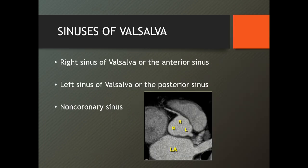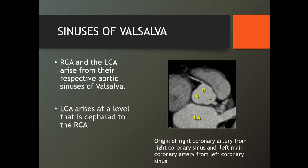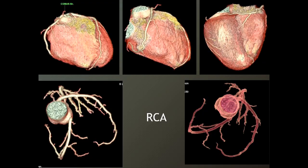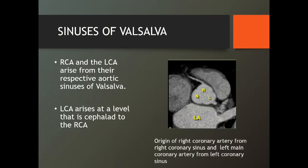Now look at this — this is the sinus of Valsalva. The right sinus of Valsalva, which is anterior, and the left sinus of Valsalva, which is posterior. RCA arises from the right sinus, left main arises from the left sinus, and that is the non-coronary sinus — so there are three parts. In axial imaging, the left coronary comes at a higher level than the RCA. The LCA arises at a level that is cephalad — cranial — to the RCA. So when looking at axials, first you will see the left, then you will see the right.